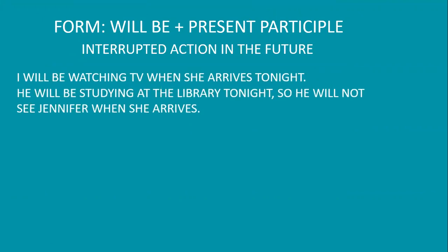To talk about interrupted action in the future: 'I will be watching TV when she arrives tonight.' The interrupted action is 'arrives tonight,' which is the shorter action. The longer action is 'I will be watching TV.' Use the future continuous to indicate that a longer action in the future will be interrupted by a shorter action in the future.